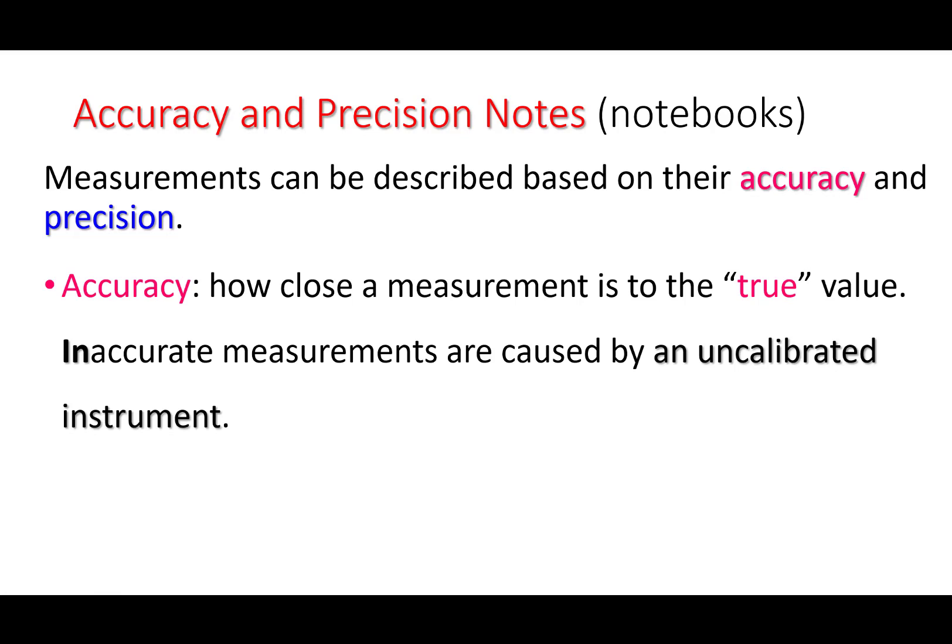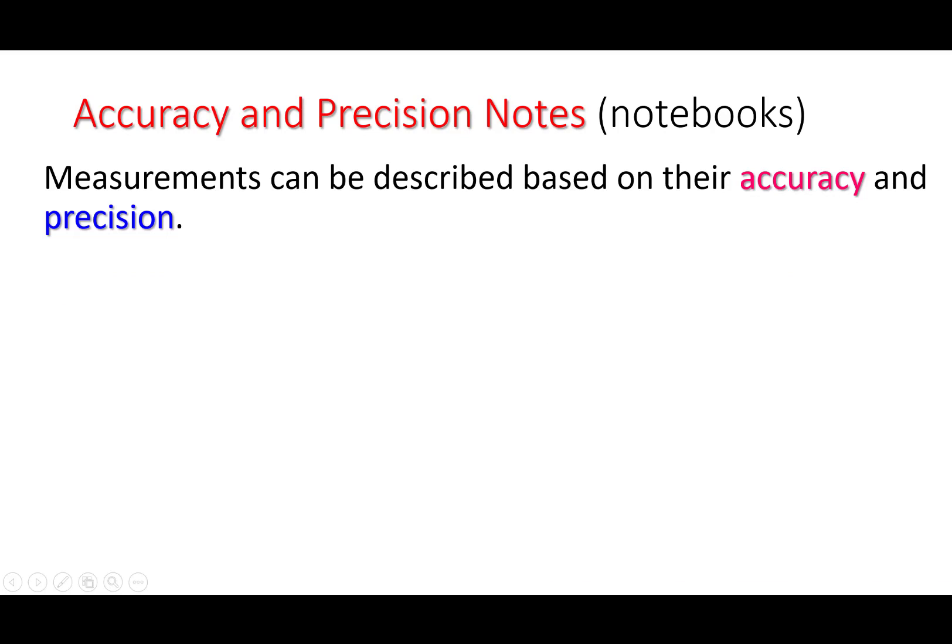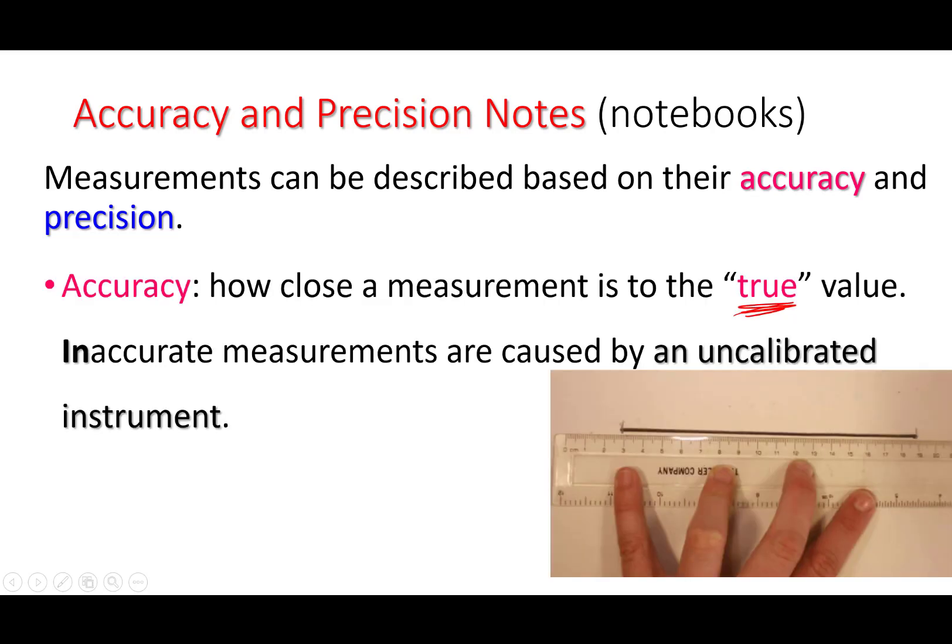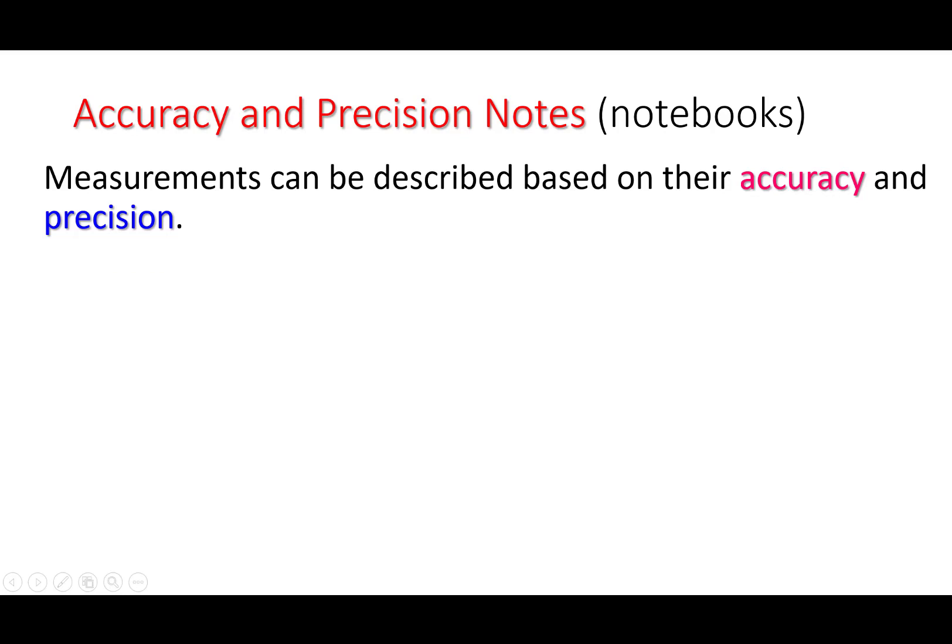Accuracy is how close a measurement is to the true value. Inaccurate measurements are caused by an uncalibrated instrument. In this example here, if we were measuring the length of that line, that would be inaccurate if we were to read off 19 centimeters because we're not starting on the zero centimeter mark on the left. So we didn't calibrate against our ruler. We're going to be off by about three centimeters. It's inaccurate.